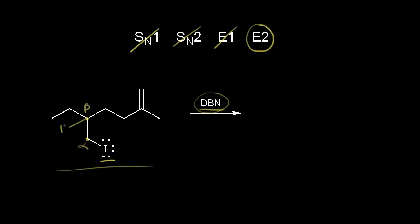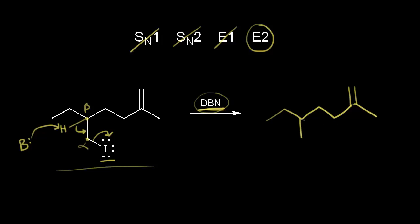There's one hydrogen on this beta carbon. DBN is a neutral base, so I'll draw in a generic base with a lone pair of electrons. This base is going to take this proton and these electrons are going to move into here. At the same time, these electrons come off to form the iodide anion. So let's draw the final product: we have this long carbon chain with a double bond in this position, formed as the electrons in magenta move in to form the double bond.